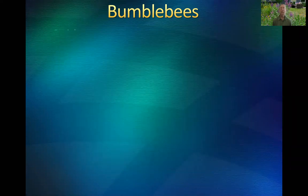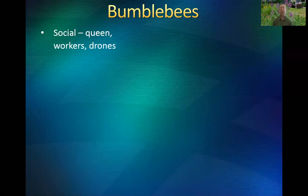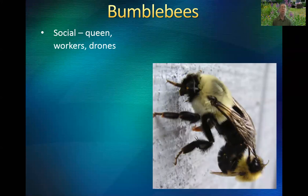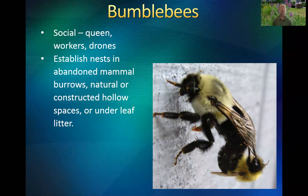A little bit more on bumblebees: they are social in much the same way that honeybees are. There's a colony with a single queen who lays all the eggs, other females which are workers doing all the care of larvae and foraging, and drones whose sole function is to mate with new queens so the whole cycle can start again next year. Bumblebees establish their nests in abandoned mammal burrows or hollow spaces, and may even nest under leaf litter — one reason I really like the motto 'leave the leaves.' If you rake up all the leaves, you're raking up housing for a lot of insects we'd like to keep.